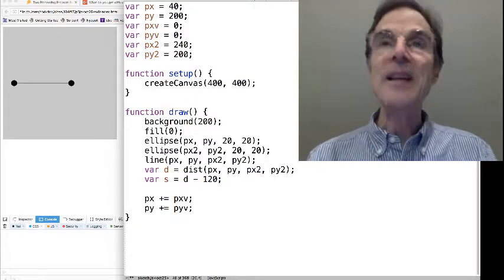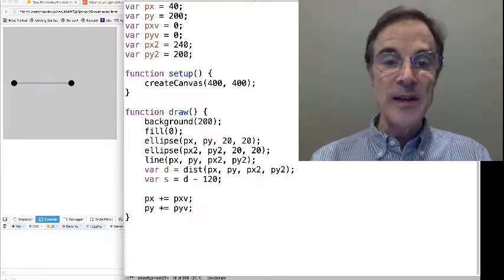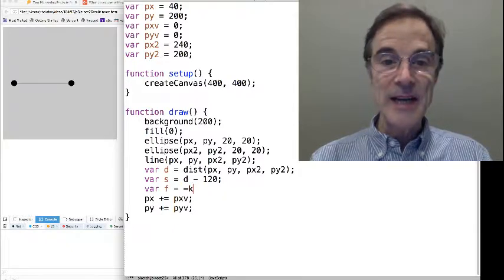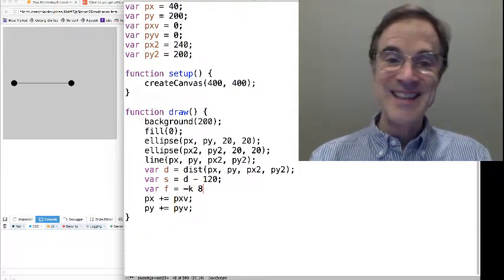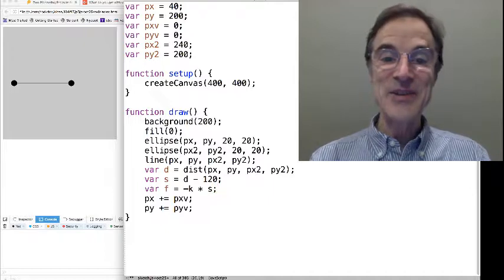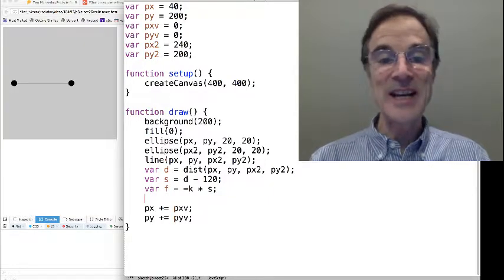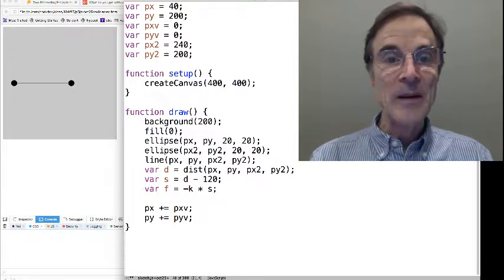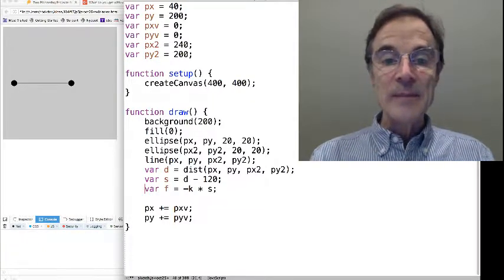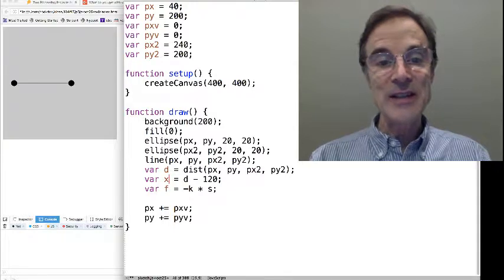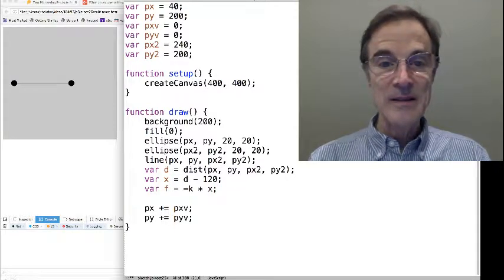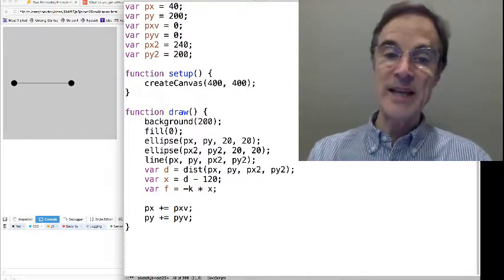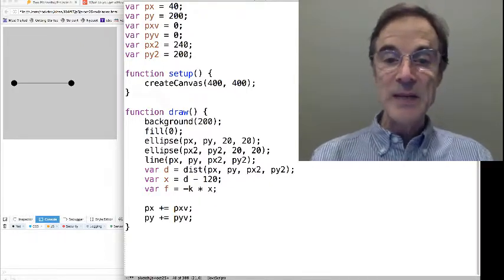And that's s. And we know from the spring law that the force is equal to minus k times the stretch. That's that minus kx that we saw before. So let's change it to x and make it match the formula. Why not? So now we have Hooke's law minus kx. F equals minus kx.